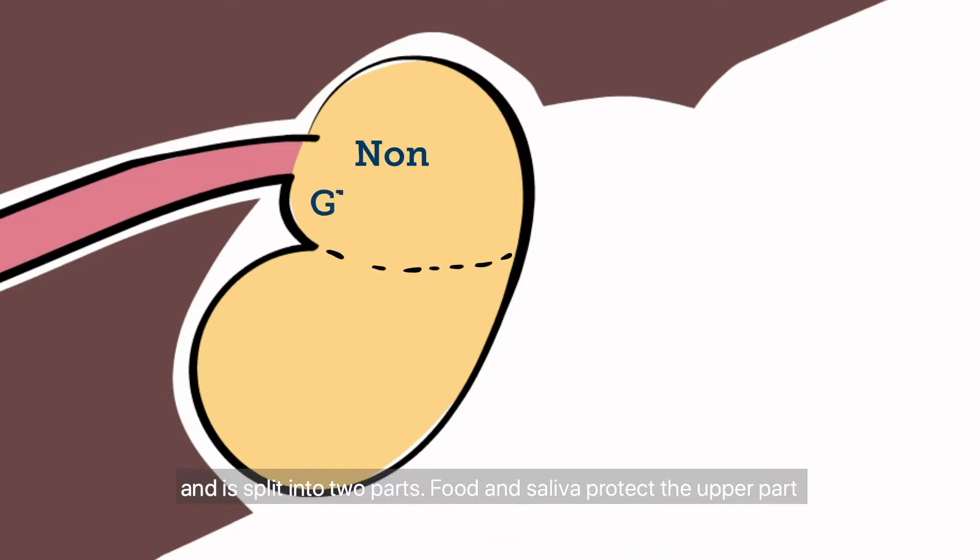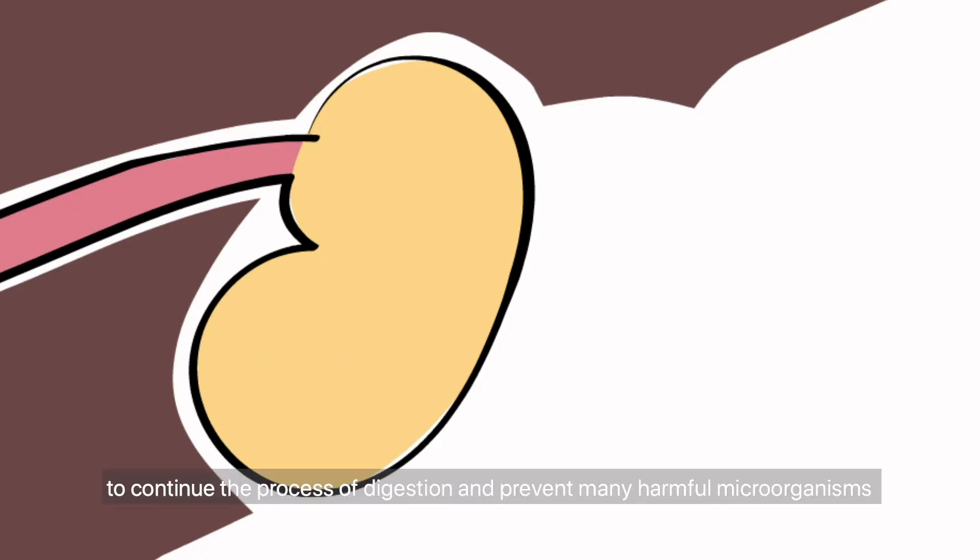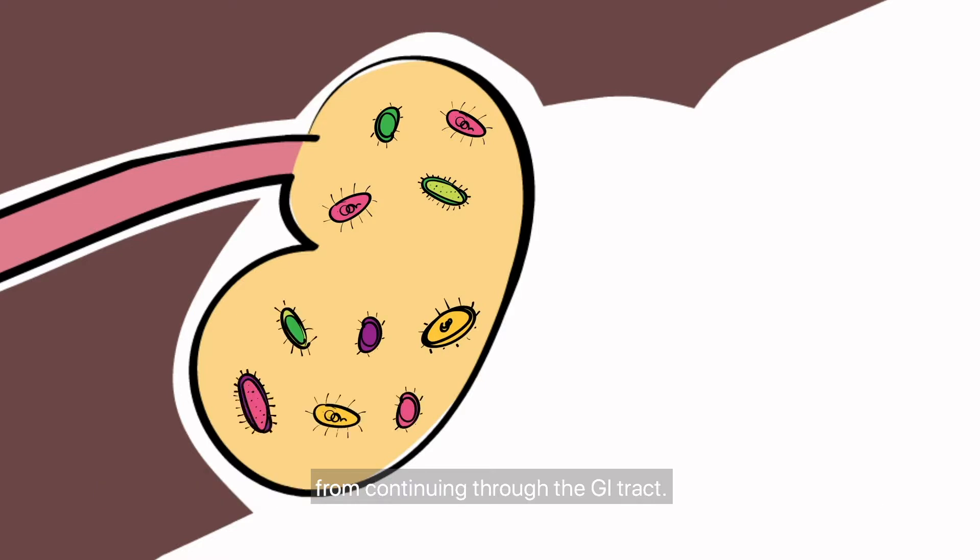Food and saliva protect the upper part, the squamous mucosa, from the caustic stomach acid that is produced by the lower part, the glandular mucosa, to continue the process of digestion and prevent many harmful microorganisms from continuing through the GI tract.